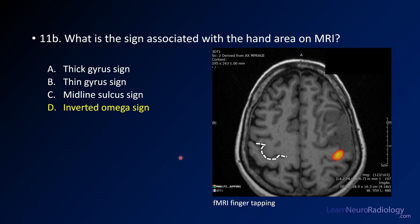The answer to the anatomy question about the sign associated with the hand area is the inverted omega sign. It looks like the Greek letter omega, just upside down — this area is known as the hand knob. This image from a task-based fMRI during finger tapping shows cortical activation in that region. Since this patient was having hand difficulties and difficulty writing, it's easy to understand why, given the location of this tumor.